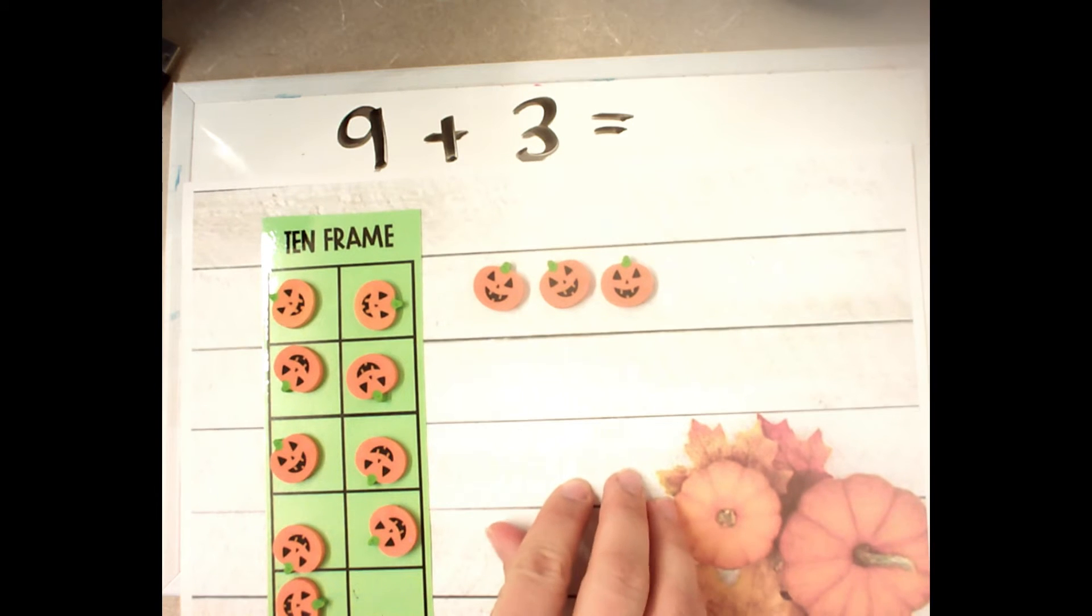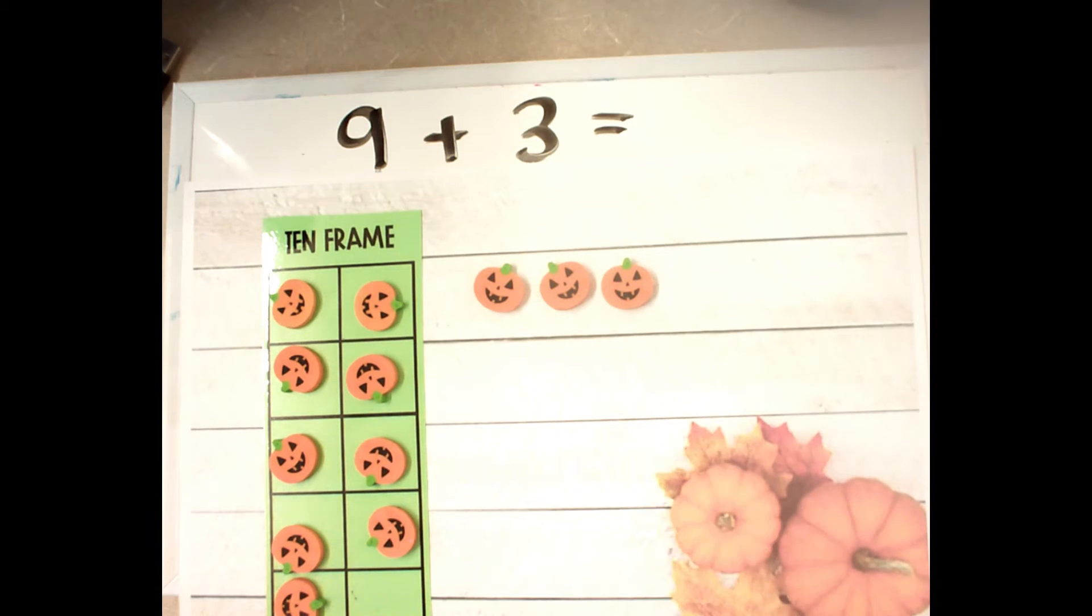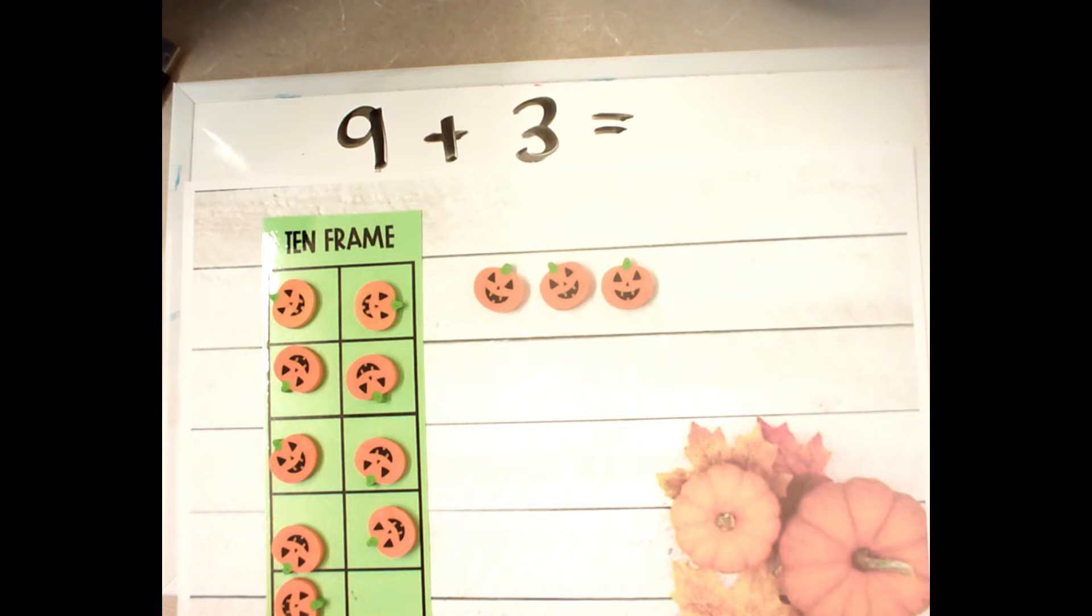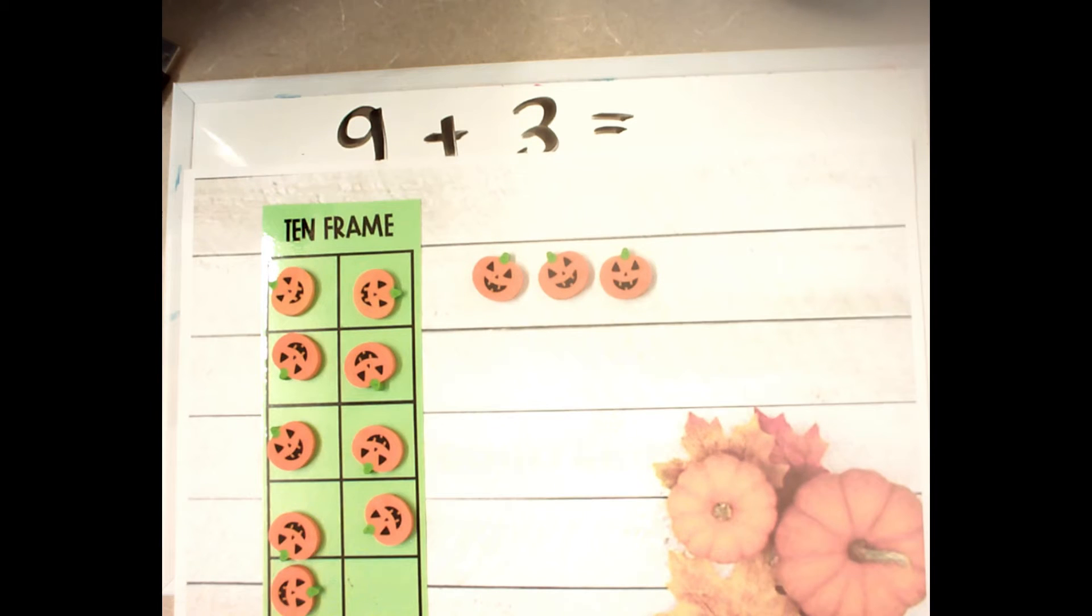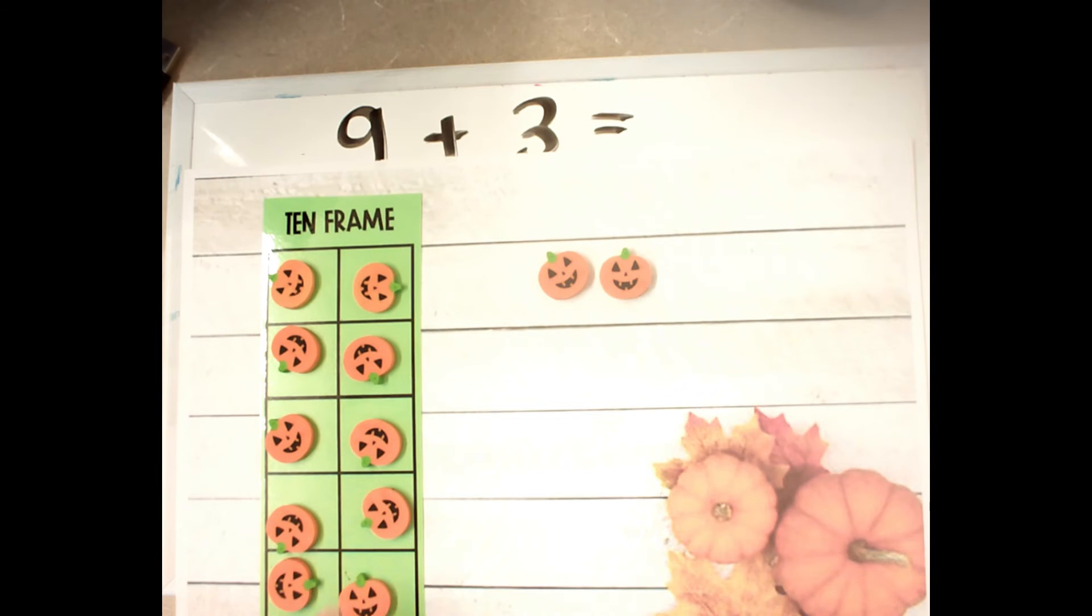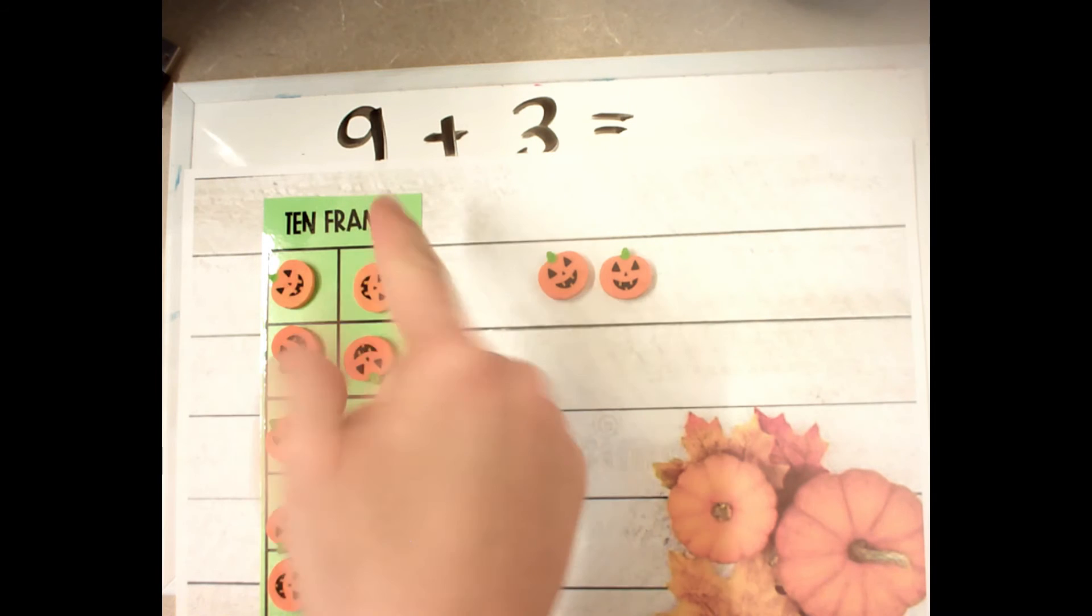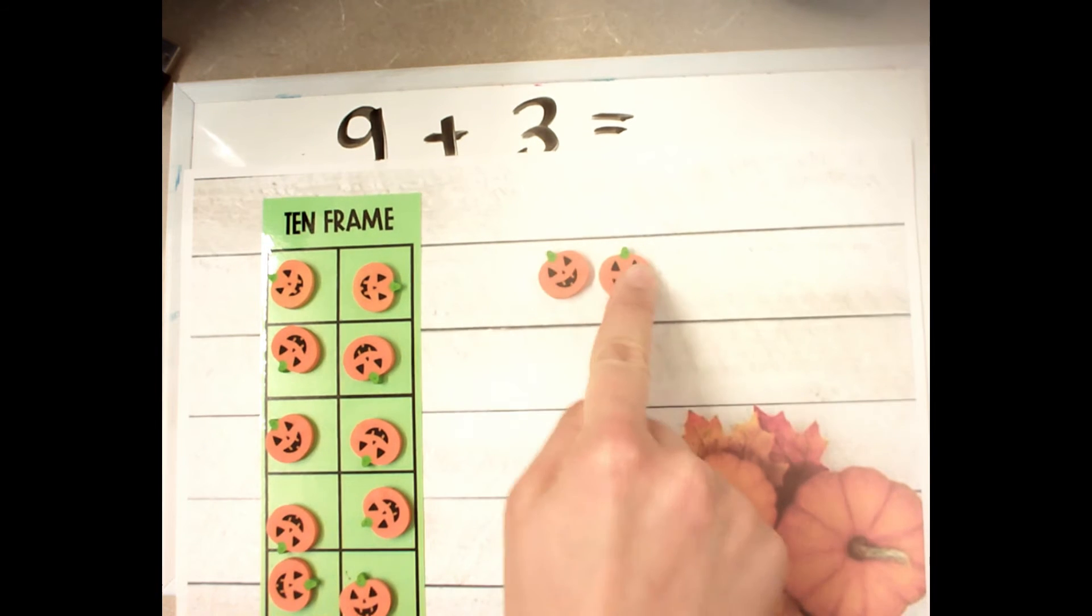So if we look at these numbers here, how many more do I have to add just to make my 10 frame full? That's right. I would just have to bring one of these ones over and now my tens frame is full. Now my problem becomes 10 plus 2 which is easier because I can think of 10 in my head and then go 11, 12.